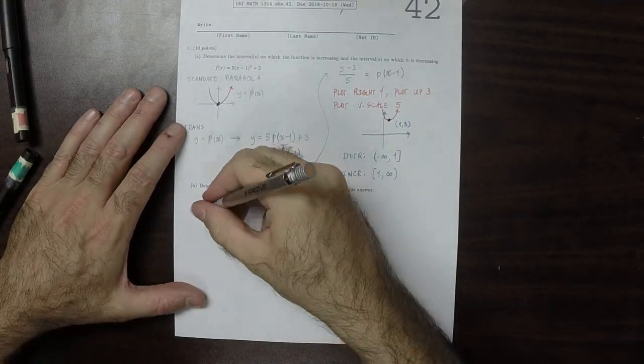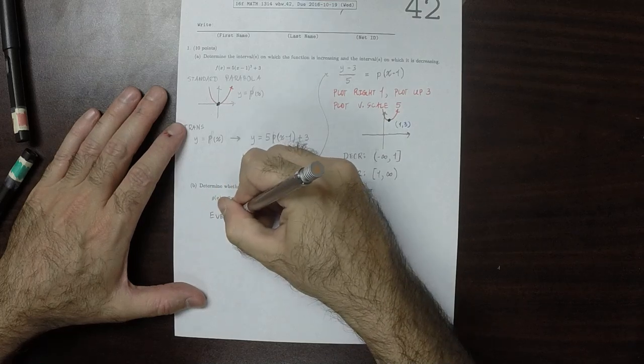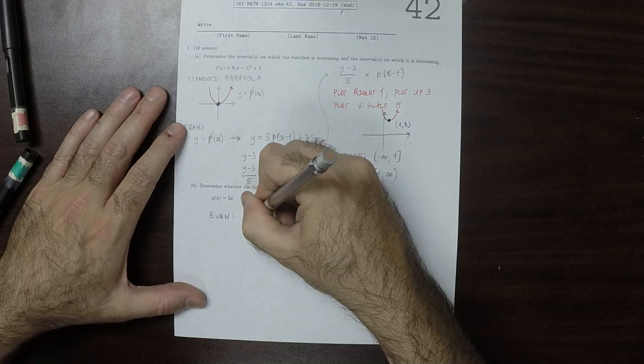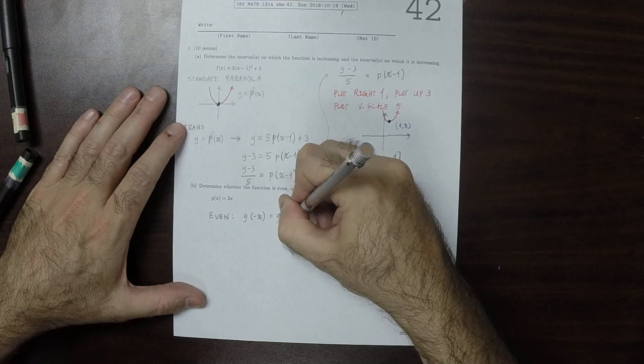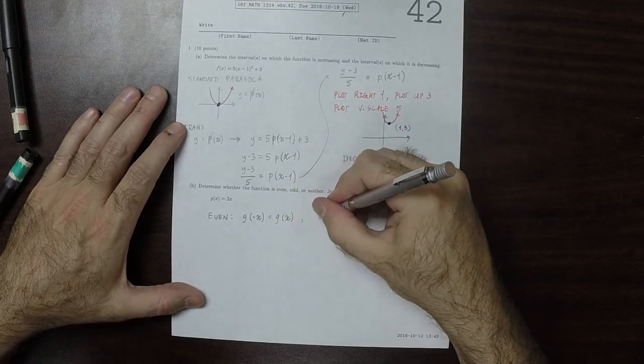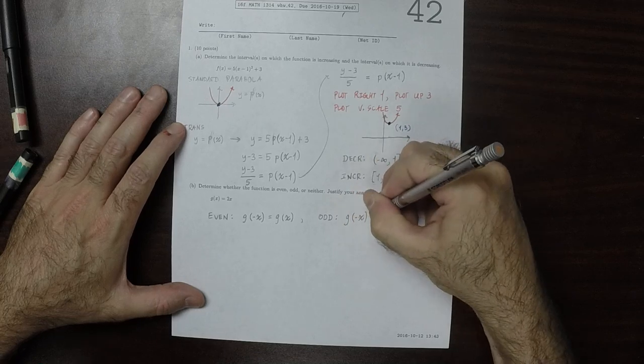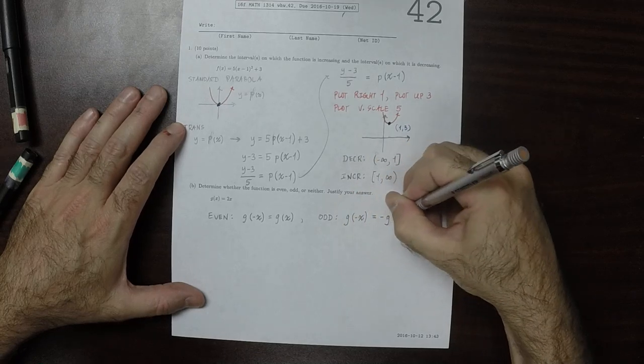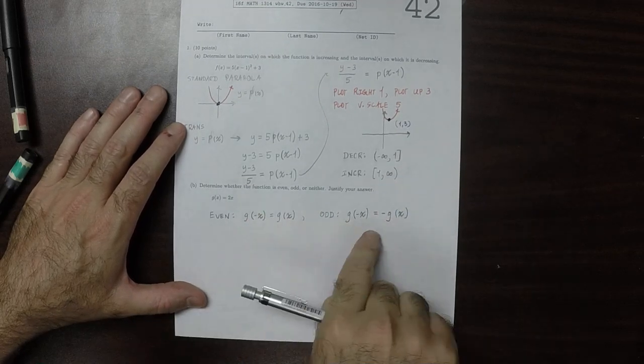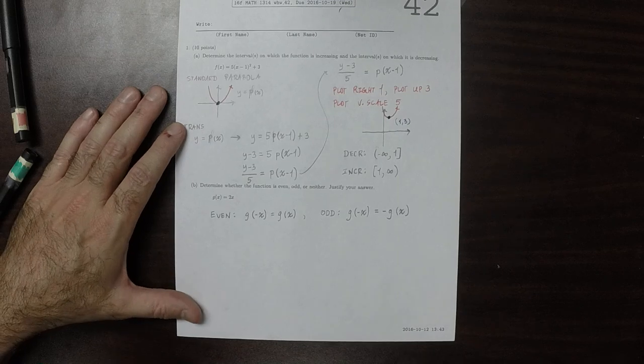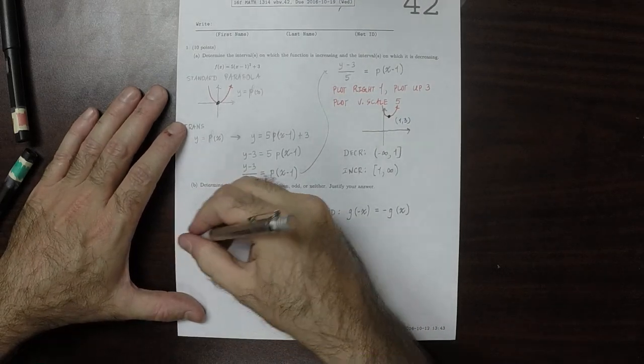So then for part B, recall that the definition of even is that g of negative x is g of x. And the definition of odd is that g of negative x is negative g of x. And if neither one of these is true, then the answer is neither. So in either case, we need to see what happens to g of negative x.